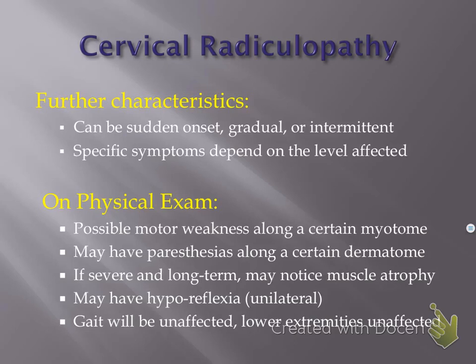Further characteristics of cervical radiculopathy: it can be sudden onset, gradual onset, or intermittent in nature — probably most common is intermittent. A patient might say every couple of months they have this arm pain that flares up and is severe but then goes away, but this time it's just not going away. The specific symptoms depend on which level is involved, so we're going to talk about those levels and the specific findings with each.